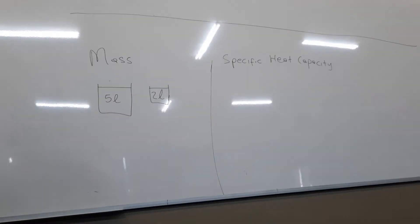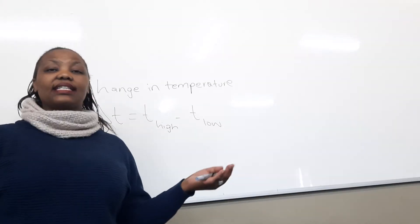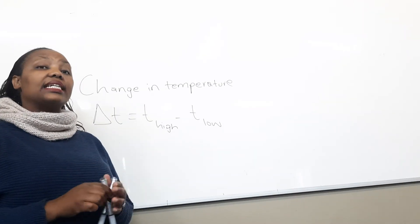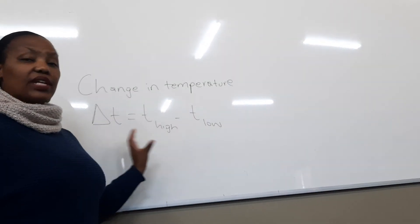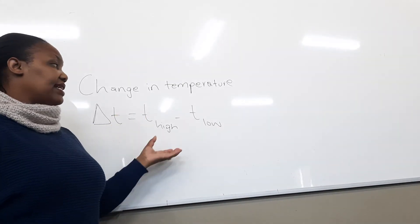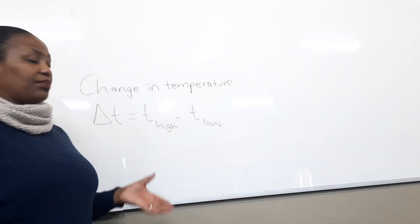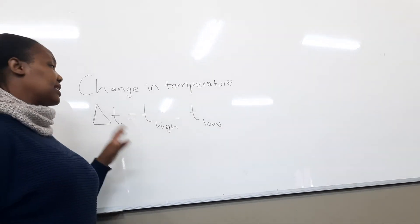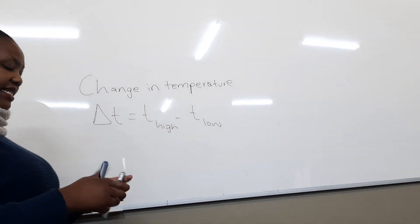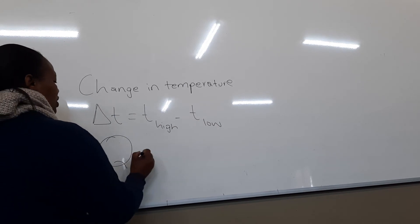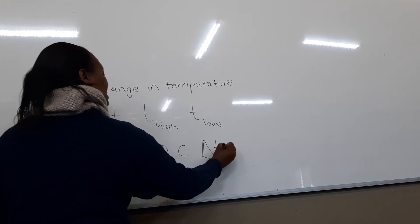The third factor is the change in temperature. The change in temperature will affect how much heat a substance takes in or gives away. It is the difference between the two temperatures — high temperature minus low temperature. The higher the change in temperature needed, the more heat energy will be absorbed; the smaller the temperature change, the less heat will be absorbed.